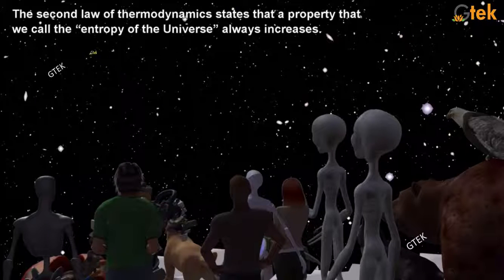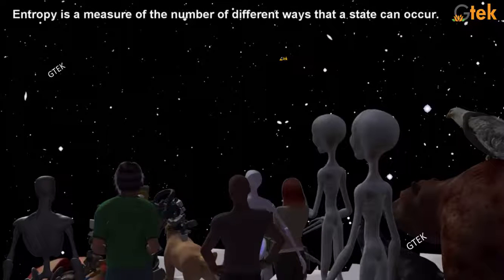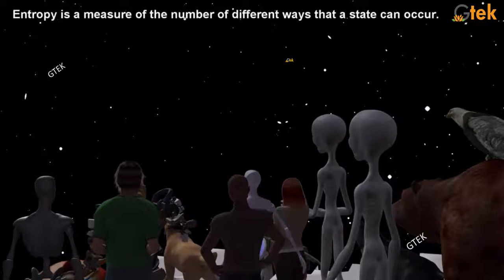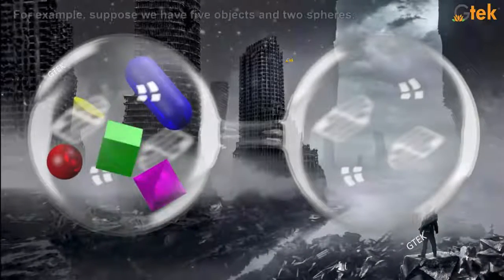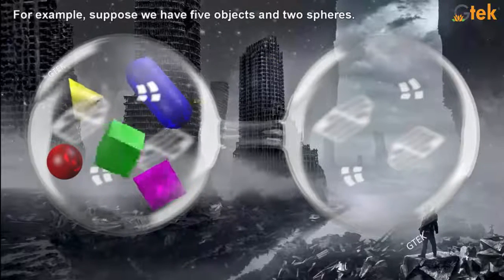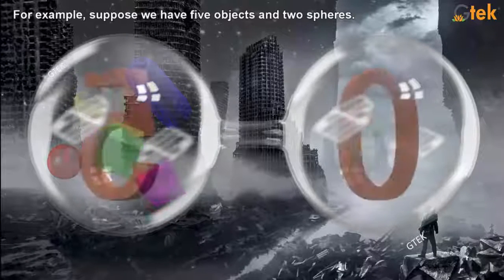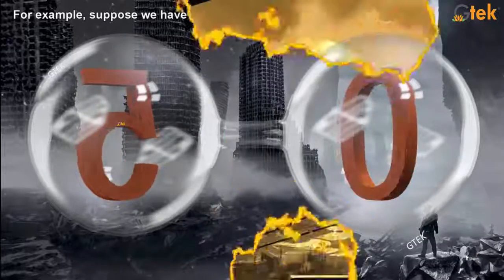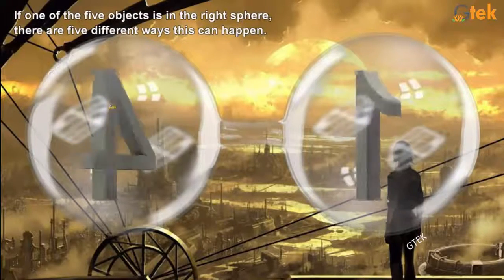The second law states that a property we call the entropy of the universe always increases. Entropy is a measure of the number of different ways that a state can occur. Let me take a simple example. I got two spheres. In that one, two, three, four, five. Five objects in one and no object here. So five here and zero here.